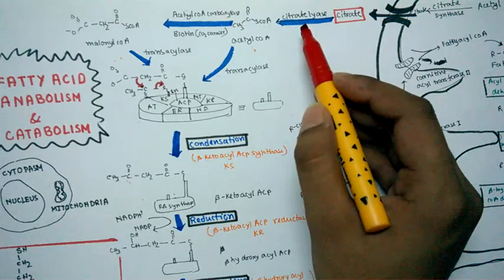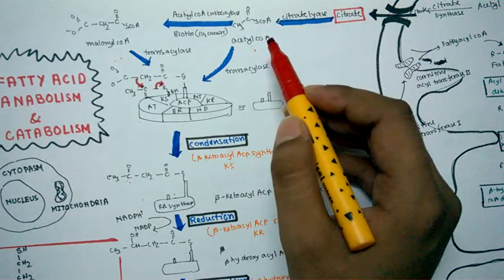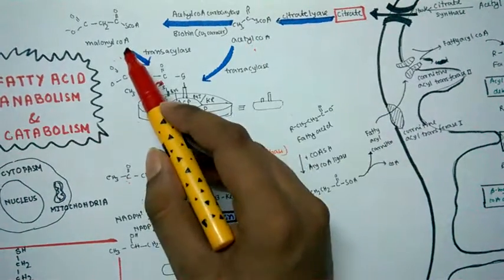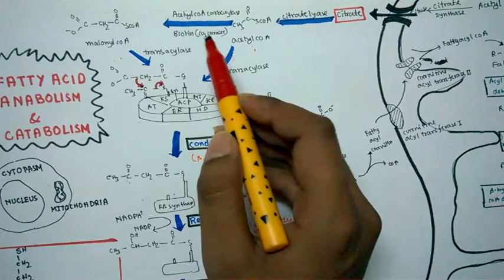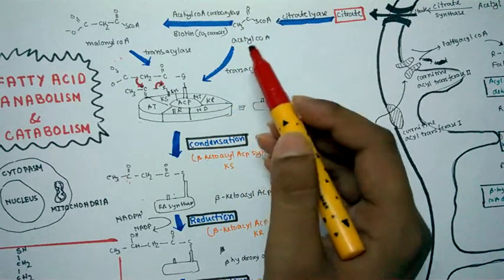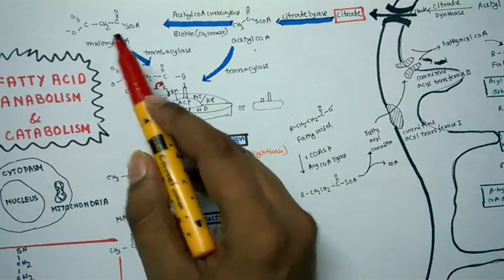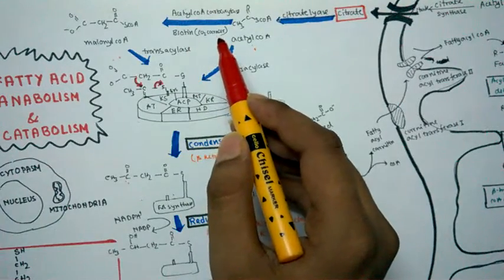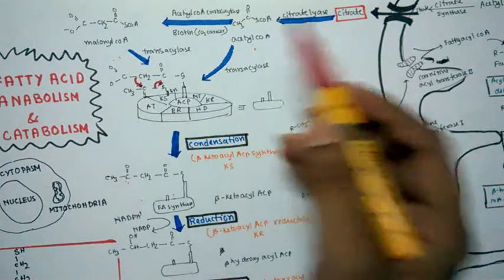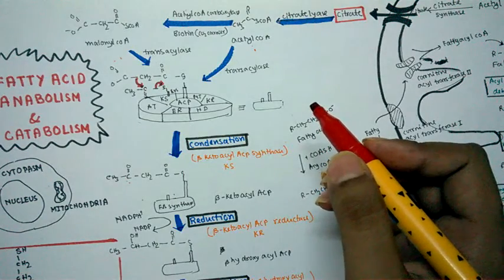This acetyl-CoA would do two things: it would take part in the condensation reaction for fatty acid biosynthesis, and from this acetyl-CoA, malonyl-CoA would be formed. One very important enzyme is acetyl-CoA carboxylase — as it is a carboxylase enzyme, it adds a carboxyl group. Malonyl-CoA has one extra carbon compared to acetyl-CoA, and the CO2 carrier for this carboxylase enzyme is biotin.